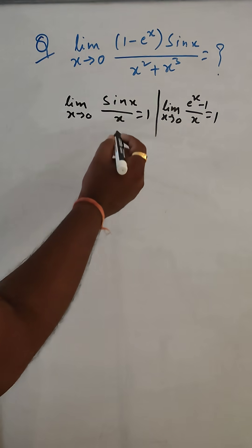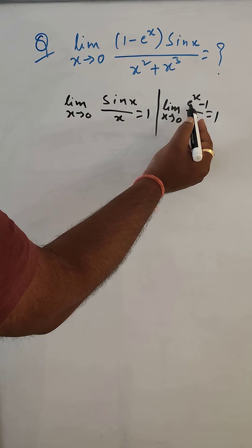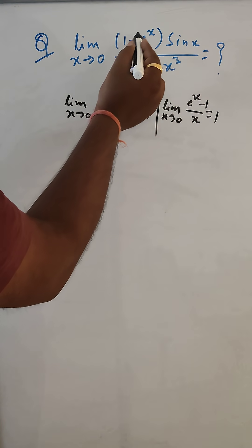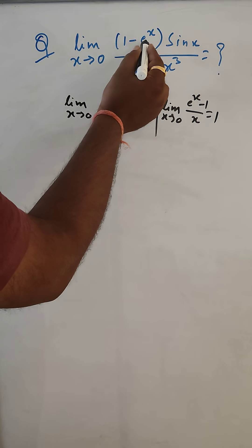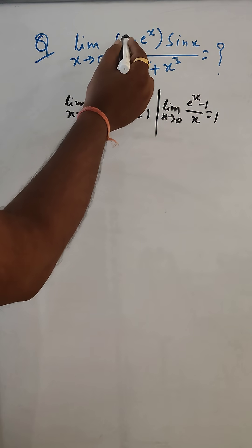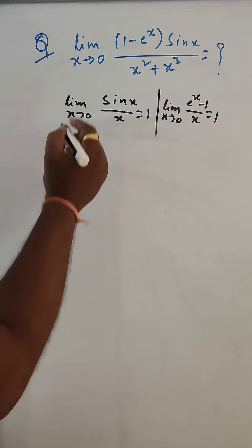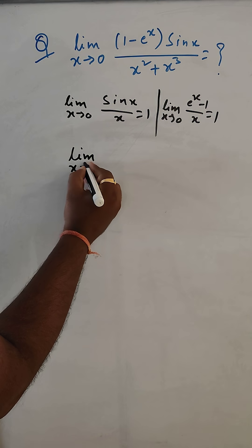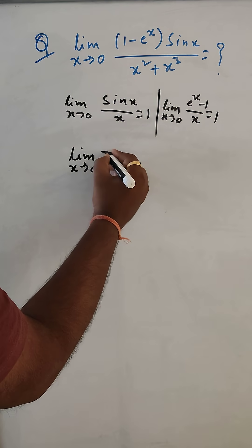Let us try to do this. See here, e to the power x minus 1. And here 1 minus e to the power x. So we have to change - we have to take minus common and make the question into proper form as per the formula.